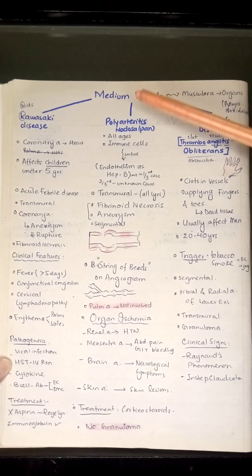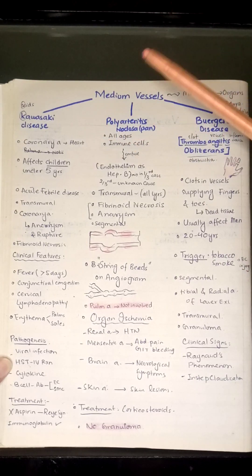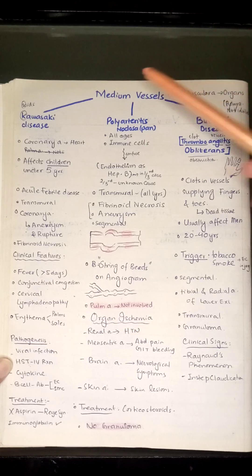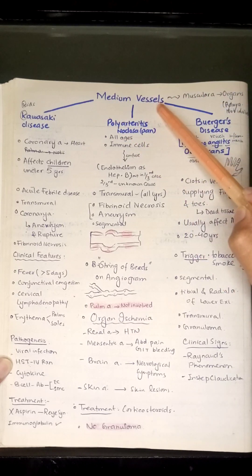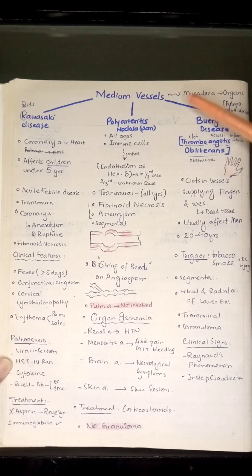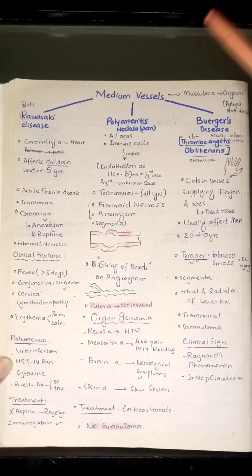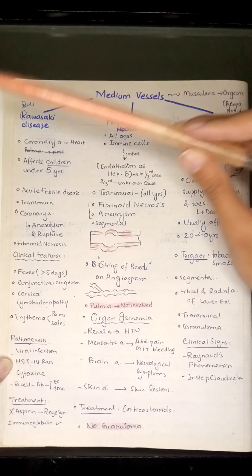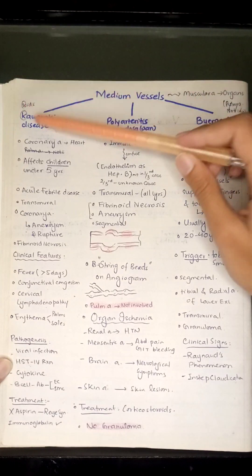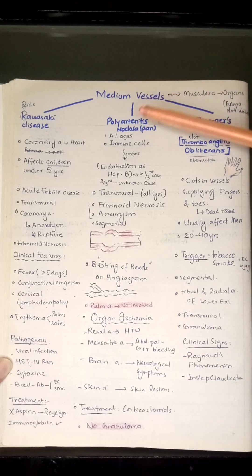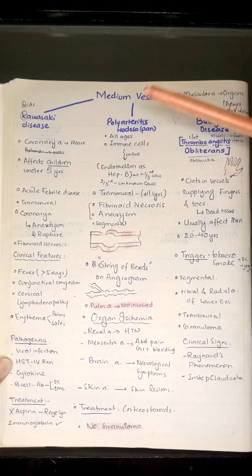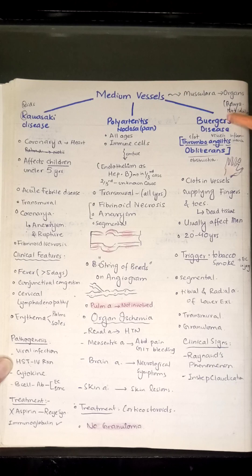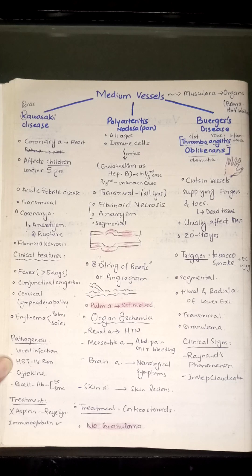This is a continuation of the vasculitis series. In this video we will be discussing vasculitis affecting the medium vessels — specifically the muscular arteries supplying the organs. In the medium vessels we have three types of vasculitis: the first is Kawasaki disease, second is Polyarteritis Nodosa (also known as PAN), and the third is Buerger's disease, also known as Thromboangiitis Obliterans.